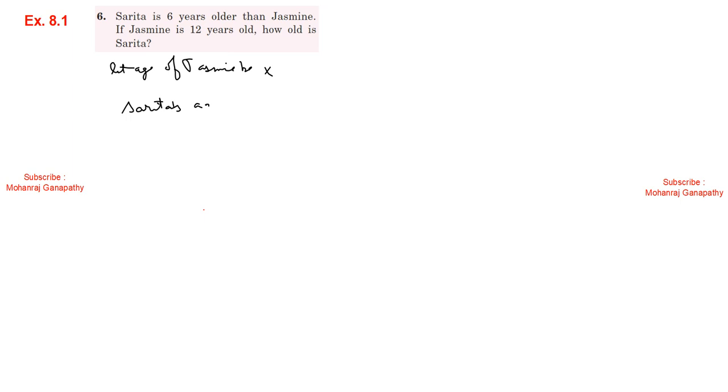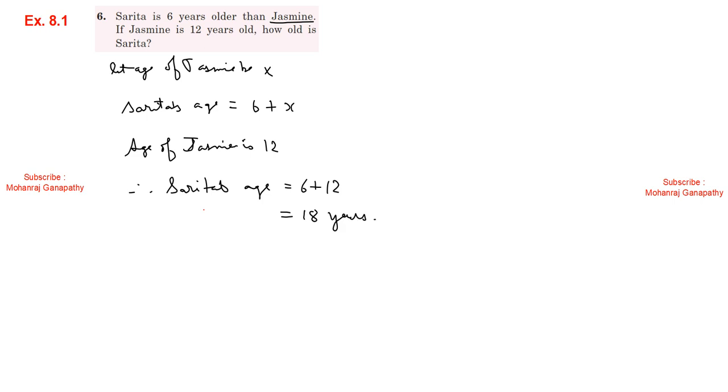Exercise 8.1, Sum number 6: Saritha is 6 years older than Jasmine. Let the age of Jasmine be x. Saritha's age equals x plus 6. Jasmine is 12 years old now. Since age of Jasmine is 12, Saritha's age equals 12 plus 6, therefore Saritha's age is 18 years.